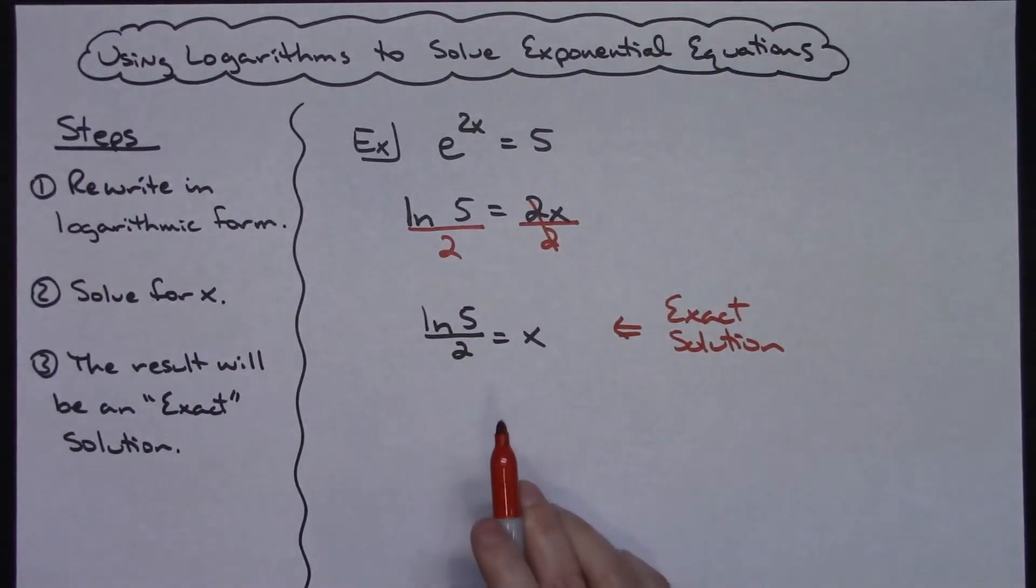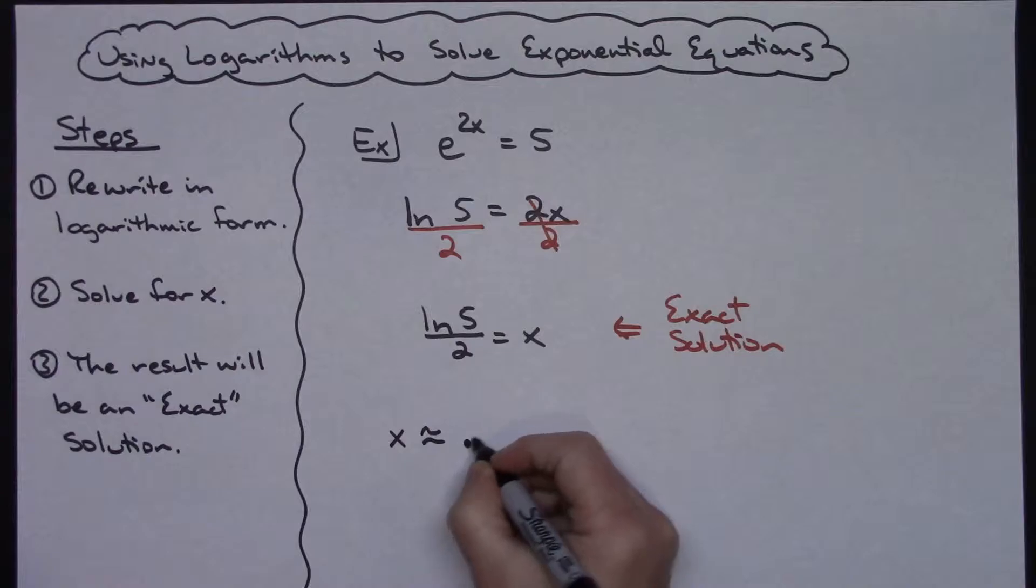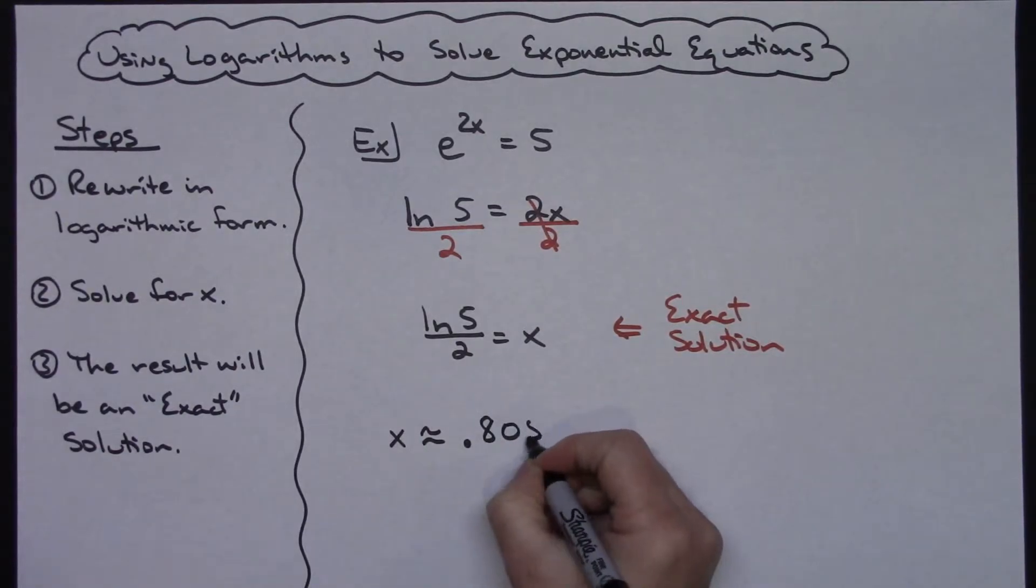If you are asked to give a decimal approximation for that, you would use your calculator and you do the natural log of 5 divided by 2. And I believe when you do that you come up with x approximately equal to 0.805.